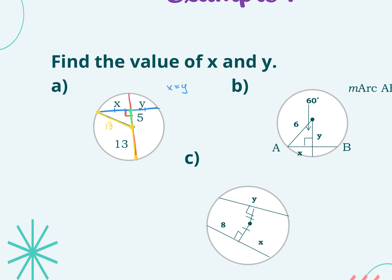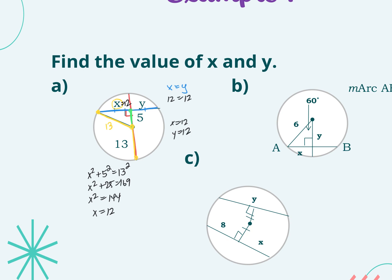We've got a right triangle here, so we can use the Pythagorean theorem to find X. X squared plus 5 squared equals 13 squared. X squared plus 25 equals 169, so X squared equals 144, and X equals 12. If X is 12, then Y is 12 also. That's how we use Pythagorean theorem in this problem while also using the strategies we learned in this chapter.